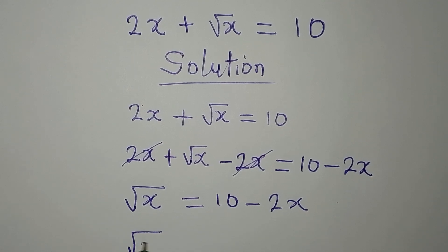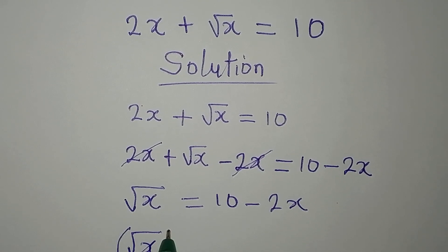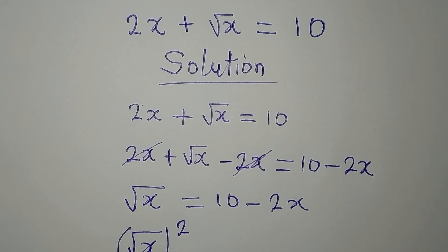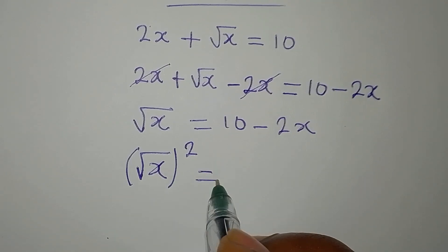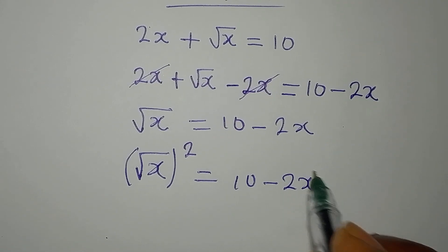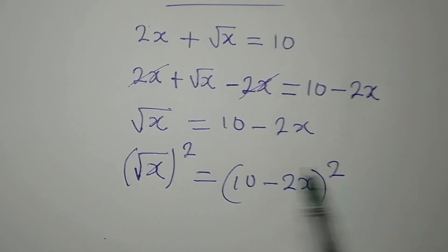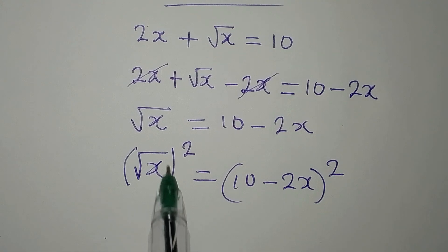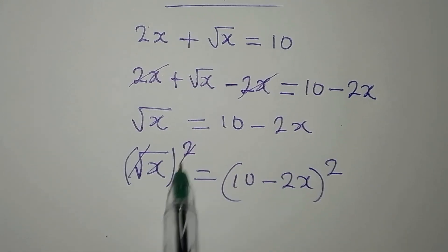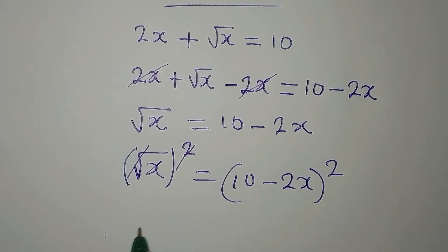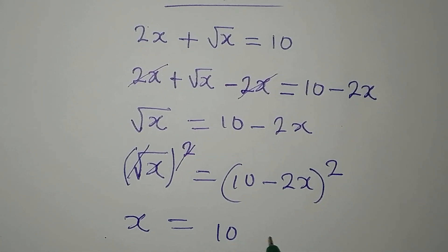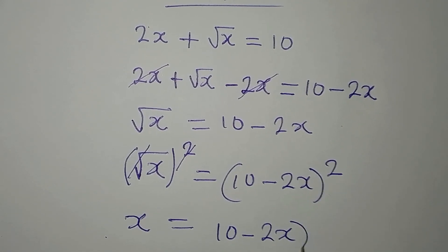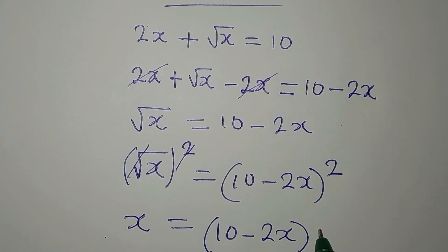Our next target is to remove this square root. We can do that by squaring both sides. Then on the other side, we have 10 minus 2x — I will square it since I've already squared the left. This can go with this. Now our x is equal to 10 minus 2x in two places because of the square.